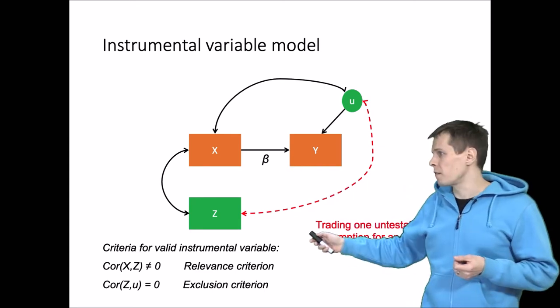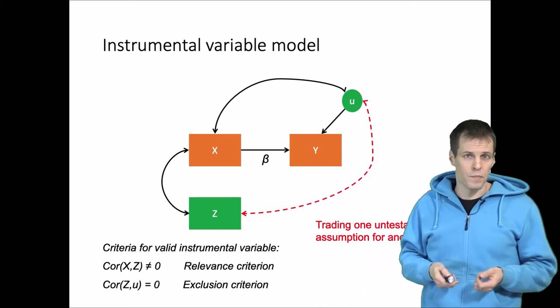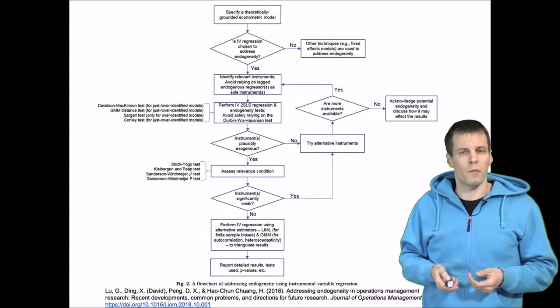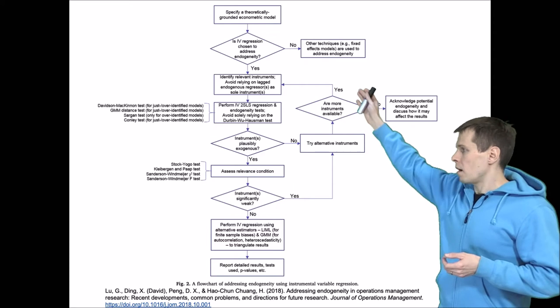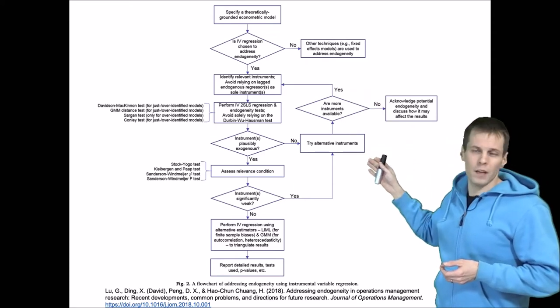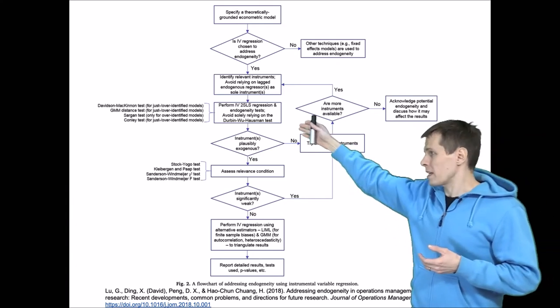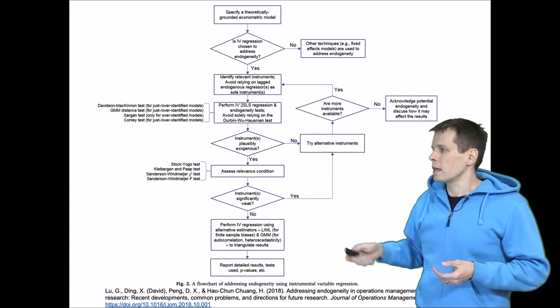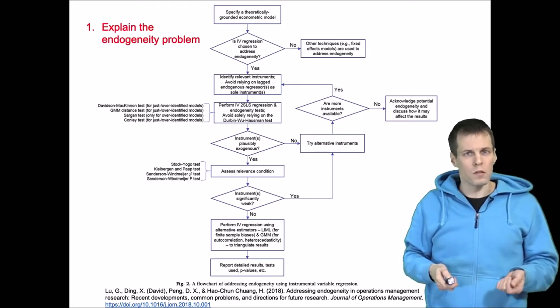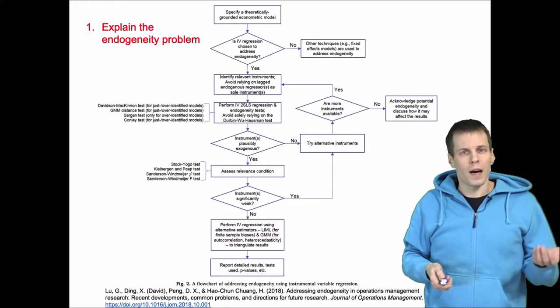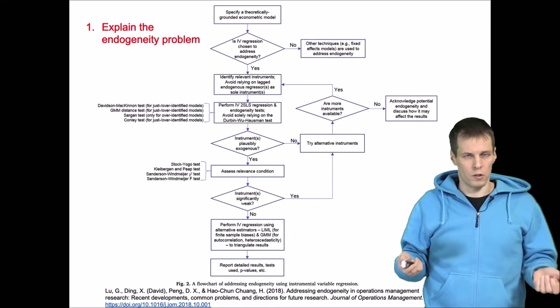So how do you justify the relevance criterion and the exclusion criterion in empirical analysis? There are some workflows available, like this one from Journal of Operations Management. I like this kind of flowcharts, they really tell you what are the options that you can use and what kind of tests you do and in which order. And this is my take on instrumental variable workflow. The first thing that you need to do is to decide whether you actually need an instrumental variable or not, and that starts by explaining the endogeneity problem.